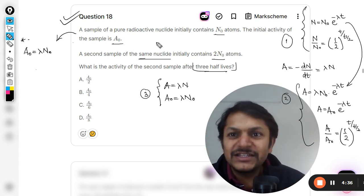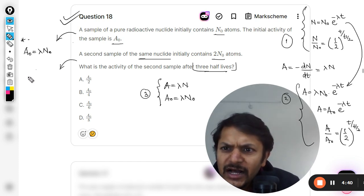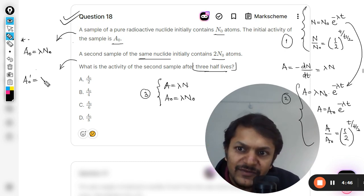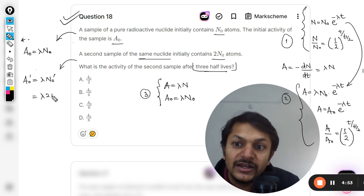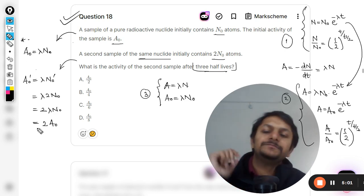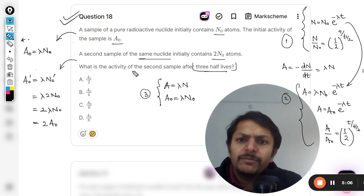So A₀ = λN₀. This is the first case. Now we're talking about the second case. The activity of this, I'm calling it maximum activity dash, will be λN₀ dash. This time λN₀ is actually double the earlier one, so it can be written like this. I can clearly say that now the activity is double.